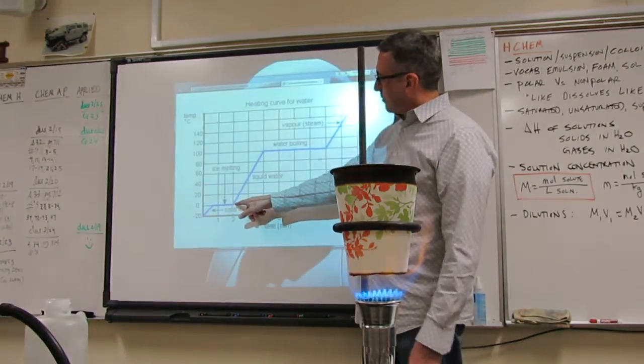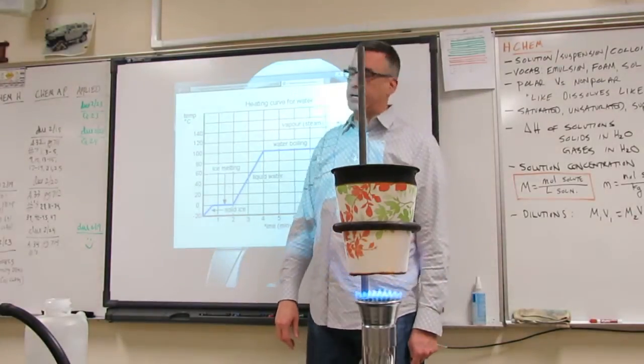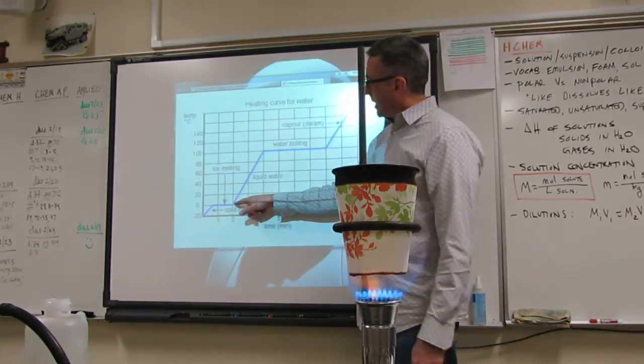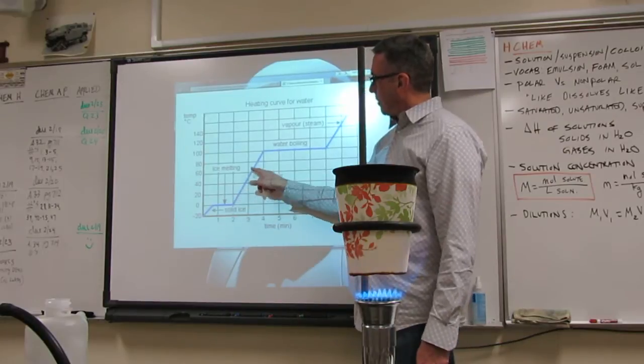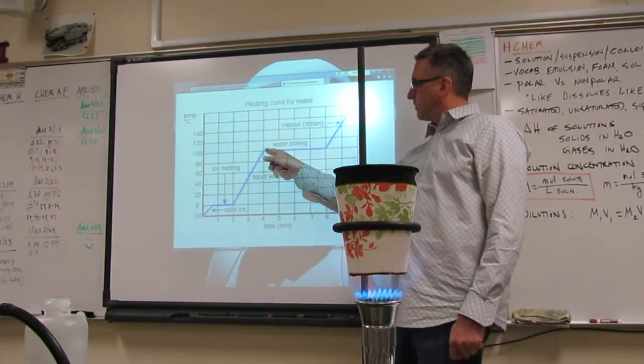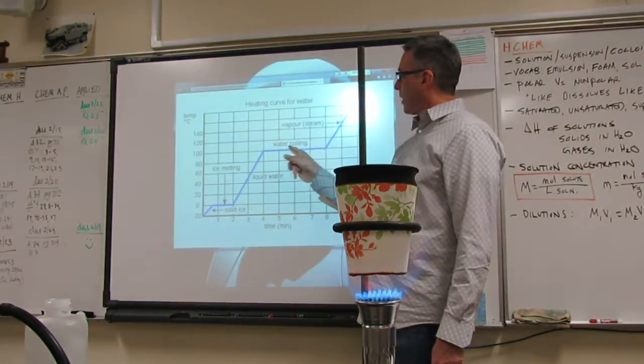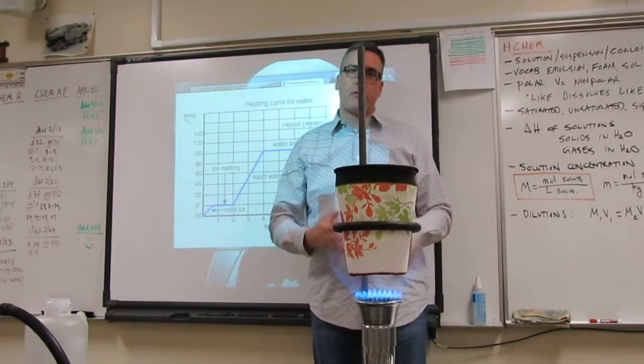At this particular point right here, the temperature begins to rise, so the phase change is complete. So you can see that as I continue to add heat, my temperature rises again and I flatline a second time right here. And this is the portion of the graph that we're interested in today. This is the heat required to vaporize or to boil that water.